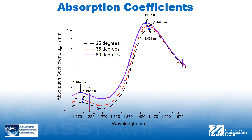Absorption in the spectral range from 1150 to 1600 nanometers is dominated by water. Two water absorption peaks are present near 1200 and 1450 nanometers, both exhibiting considerable blue shifts as tissue temperature increased to 60 degrees Celsius. Specifically, the water absorption peak shifts from 1192 nanometers at 25 and 36 degrees Celsius to 1184 nanometers at 60 degrees Celsius, while the peak at 1454 nanometers shifts to 1449 nanometers at 36 degrees Celsius and to 1441 nanometers at 60 degrees Celsius.